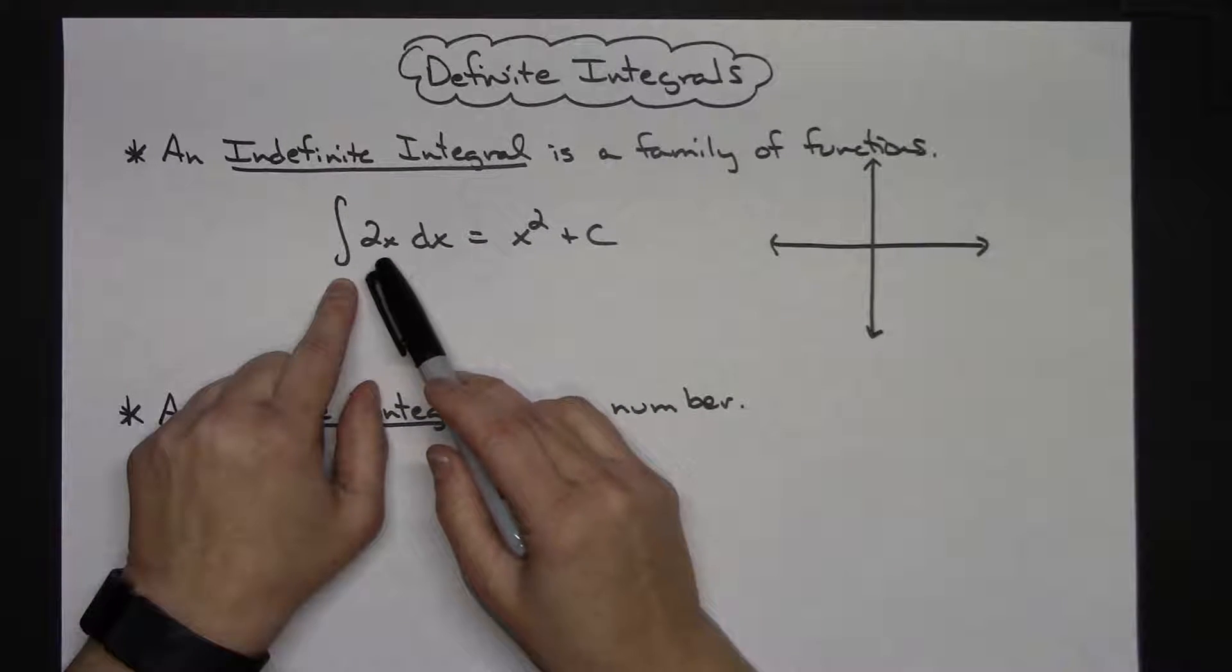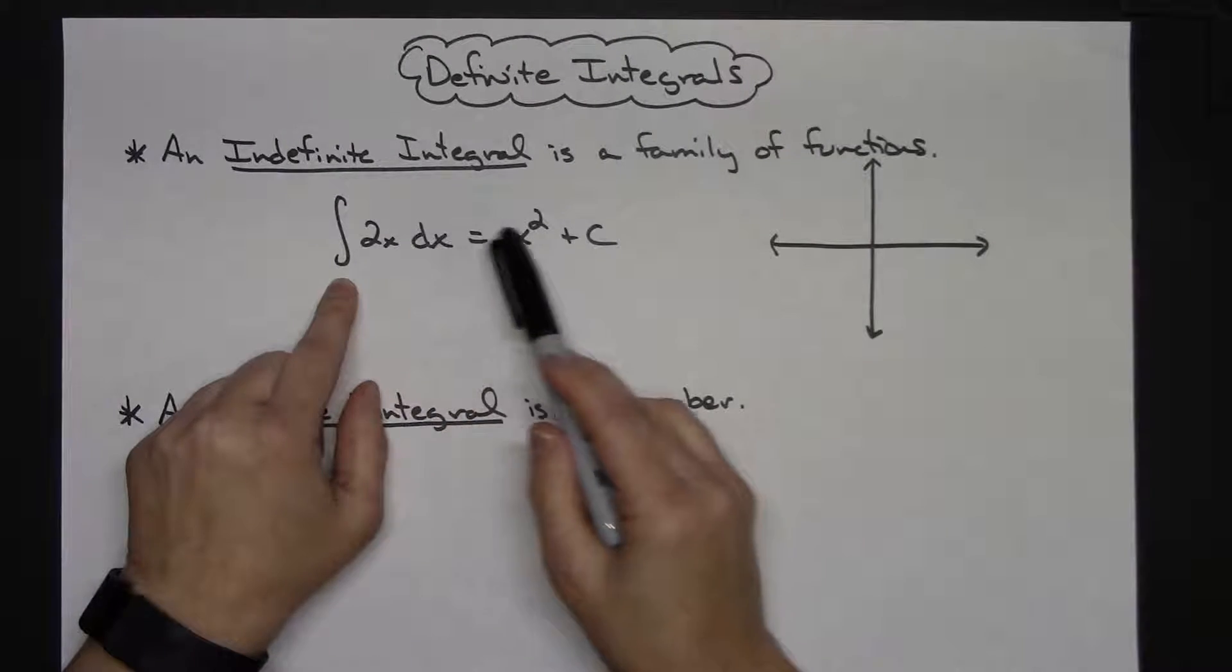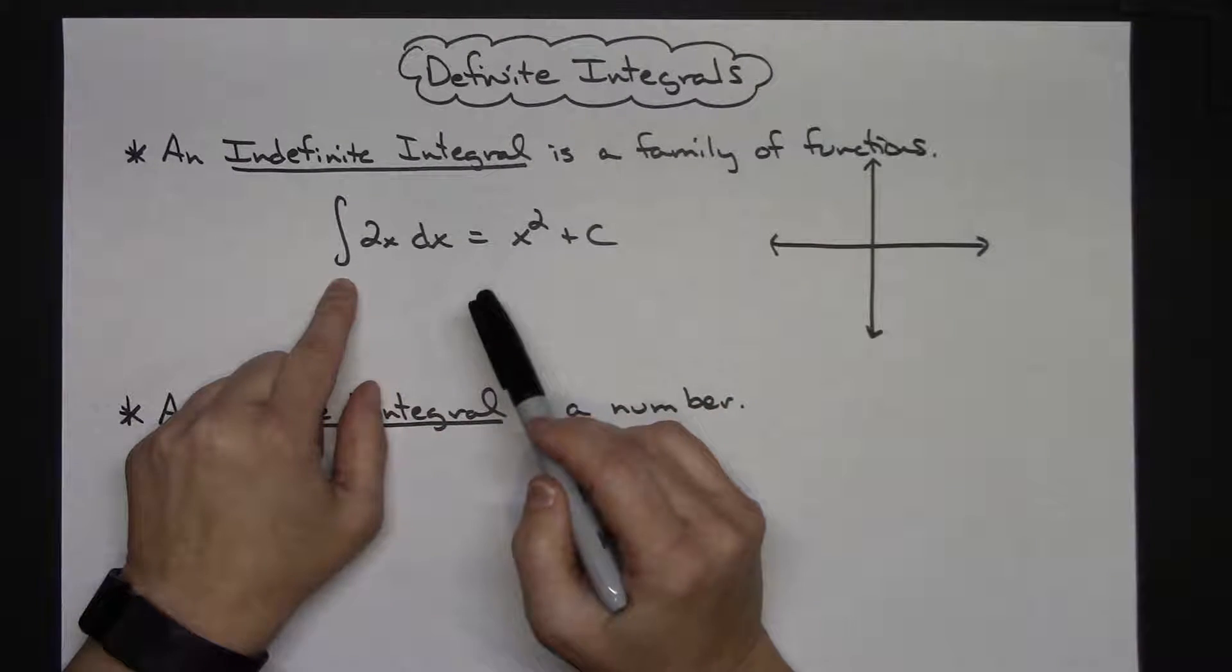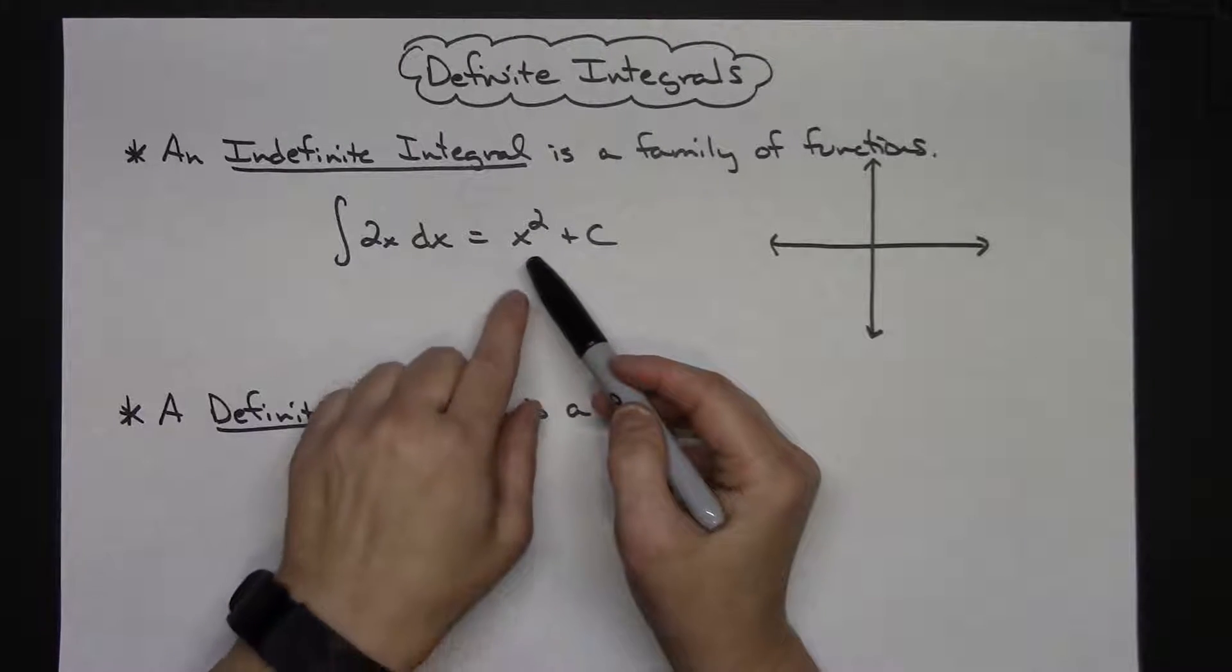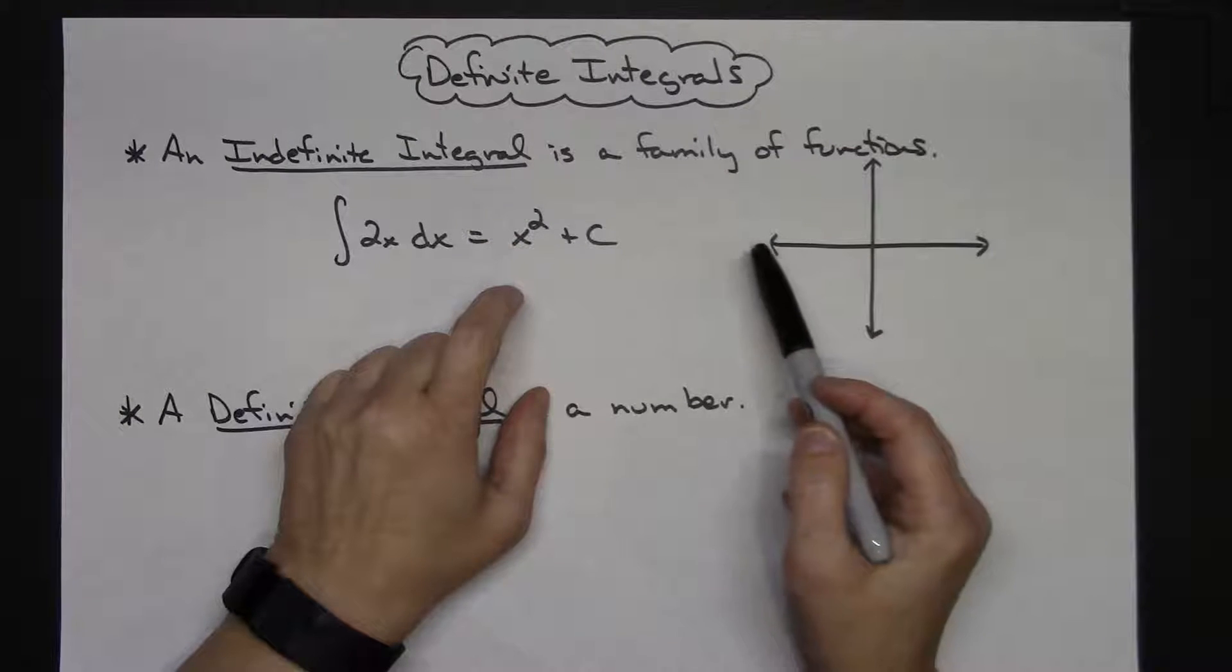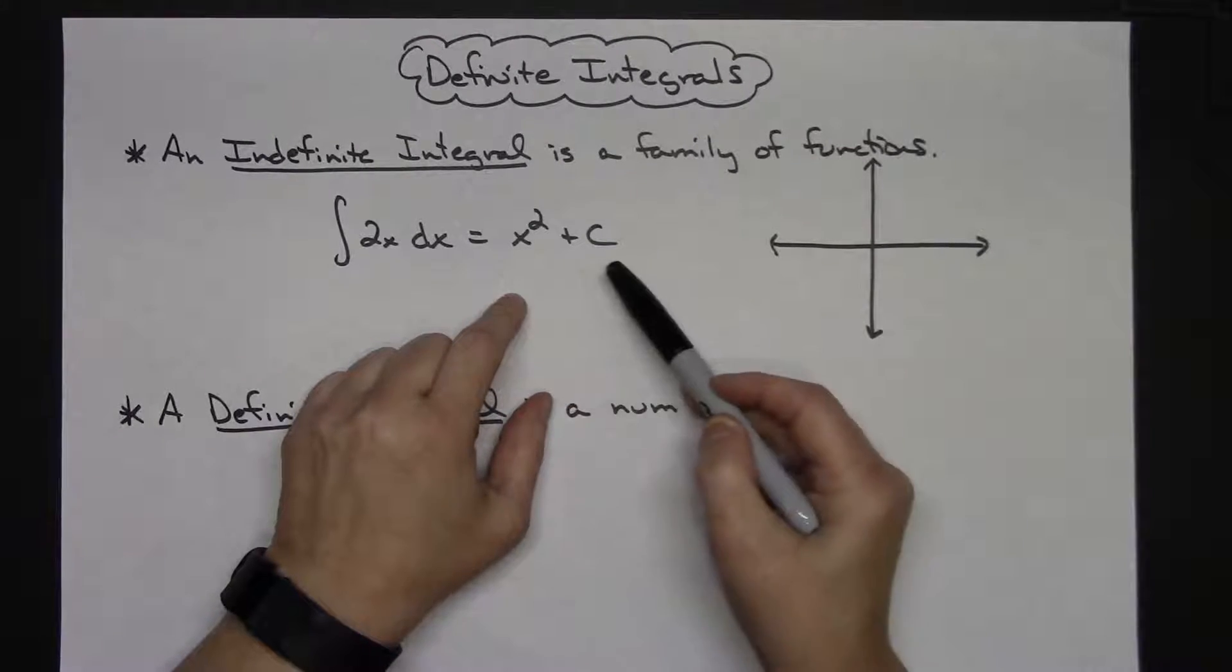So if I integrate this, I'm going to add 1 and get a 2 here and then divide by there. I'm going to get my x squared. So x squared and then we put the plus C on here. Now I do want to go a little bit about this - this represents a family of functions.